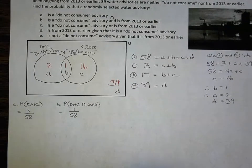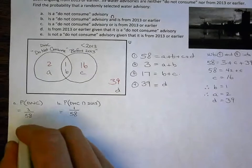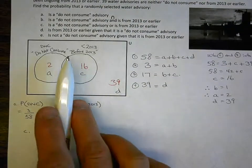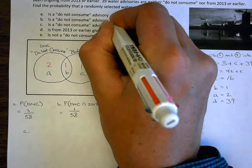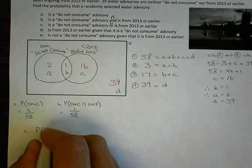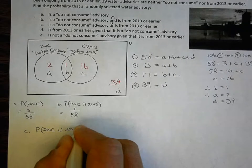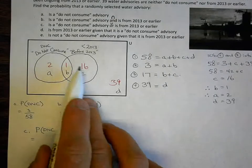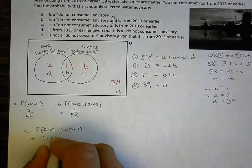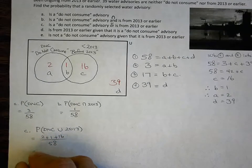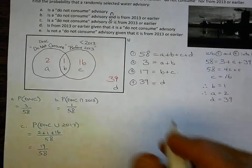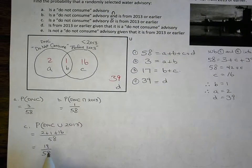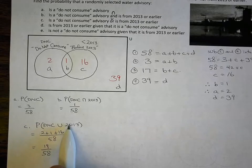Part C: what is the probability that a given water advisory is do not consume or from 2013 or earlier? 'Or' means union, so I add: 2 + 1 + 16 divided by 58 gives me 19 over 58. Almost a third of water advisories are either very serious or very long-standing — that's not a great statistic.